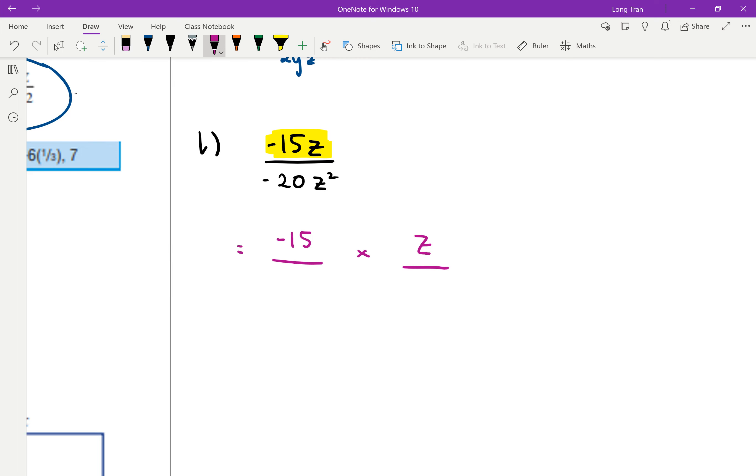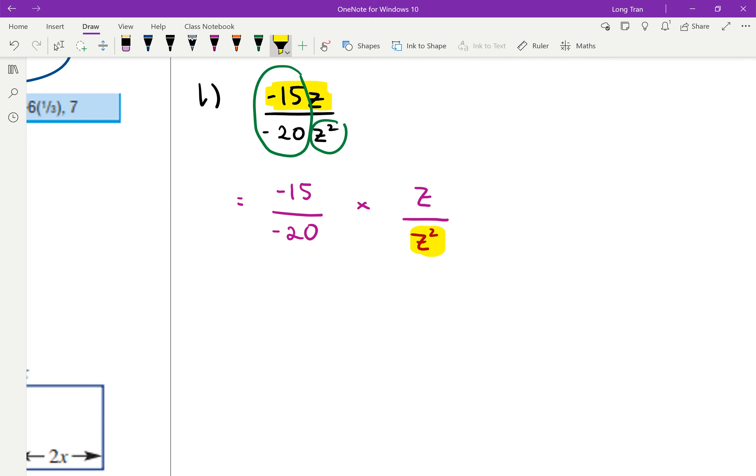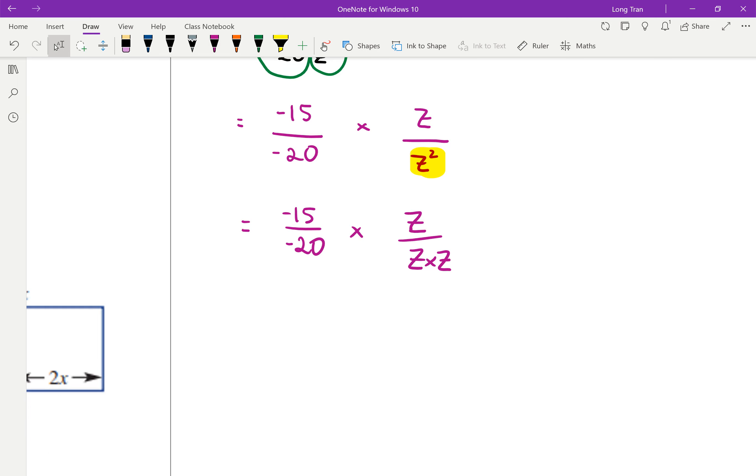We've got negative 20, so I'll keep the numbers with each other, so negative 20 times with z squared, I'm going to keep it in the denominator here. Now, I can technically even break this z squared even further, because this basically means z times z. So, when I write it, I can write it again as negative 15 over negative 20, multiplied to z over z times z. And we can see that since there are two of these on the bottom, I can actually split it up even further. And I know you don't have to, I like to do this so that students understand how it comes about.